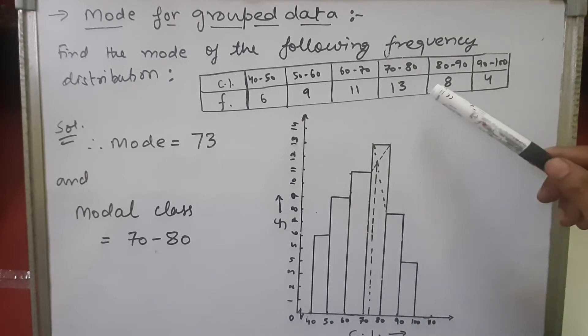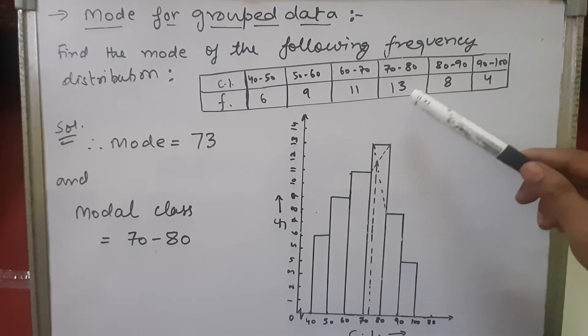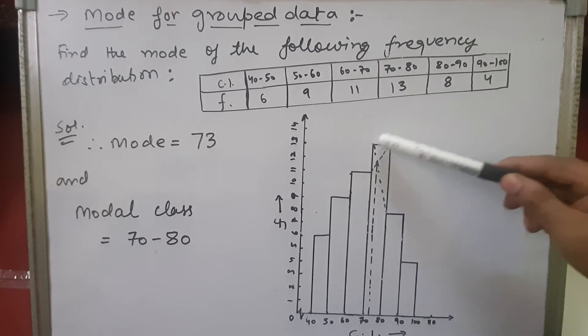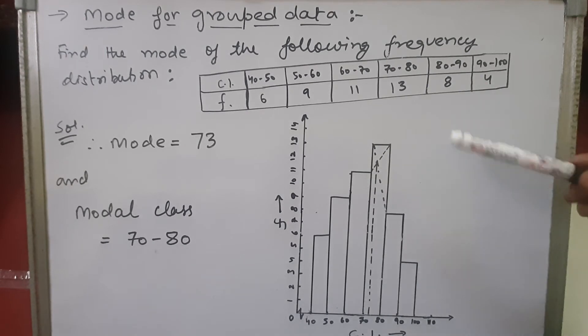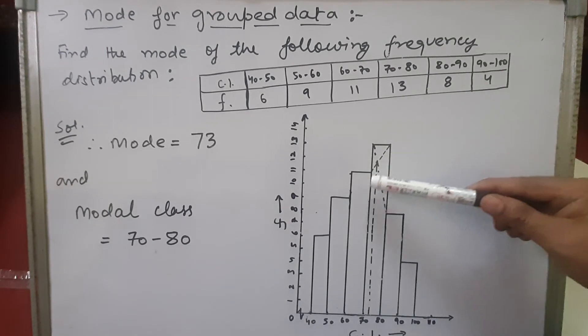Now you can see where is the maximum frequency. Maximum frequency is here, 13. So this is the biggest rectangle. Whenever you find the biggest rectangle, what we'll do is we'll join the corners of the bigger rectangle to the side touching the neighboring rectangle.